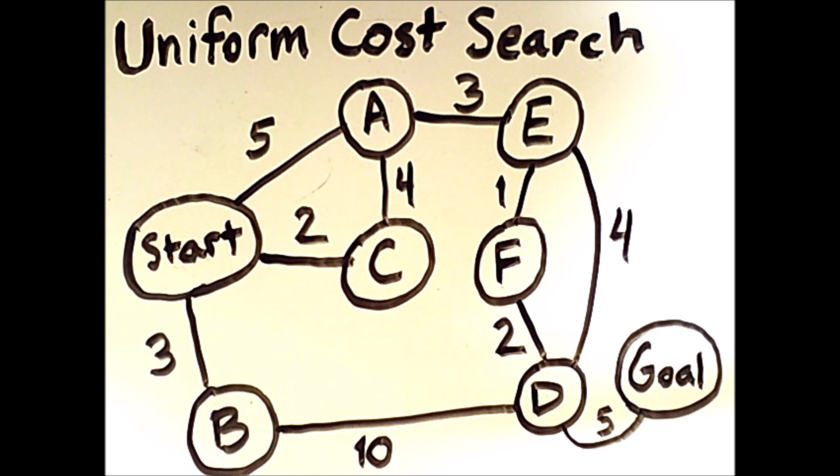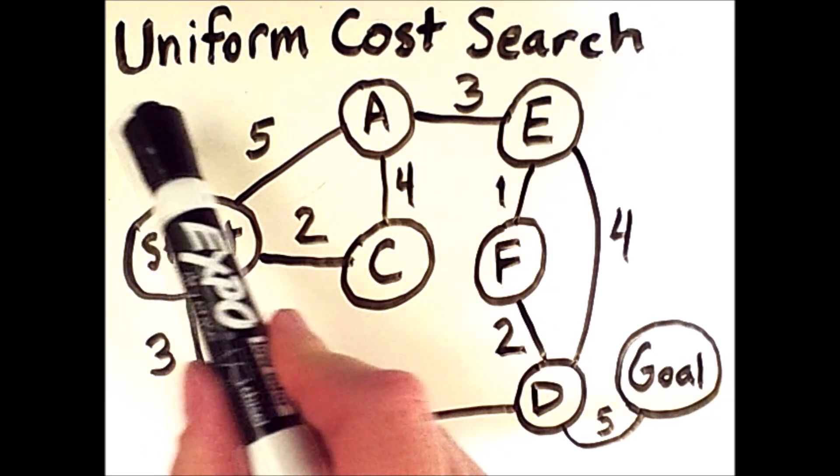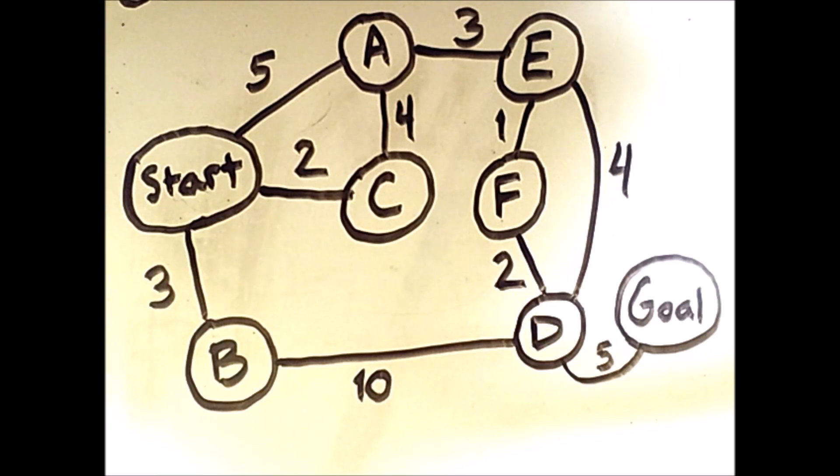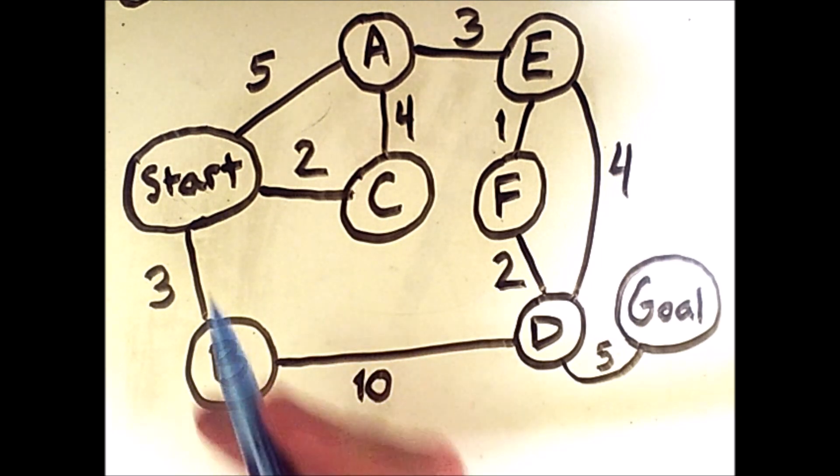We want to find the path from the start to the goal that minimizes the sum of the costs of all edges traversed. An algorithm that will give us this minimum cost path is uniform cost search. Our search problem will begin at the start state.